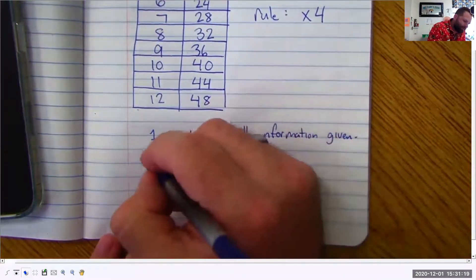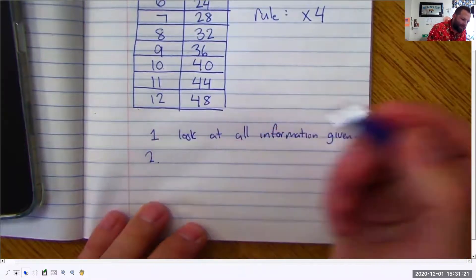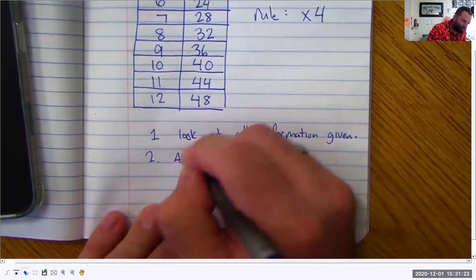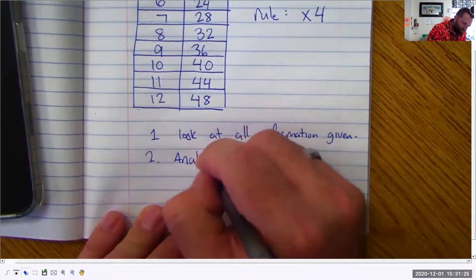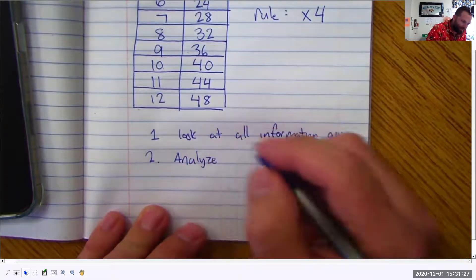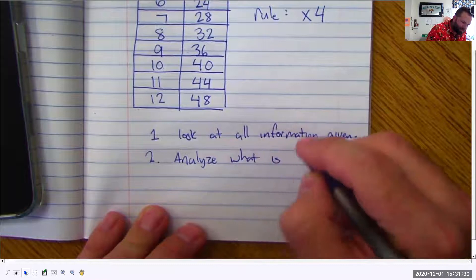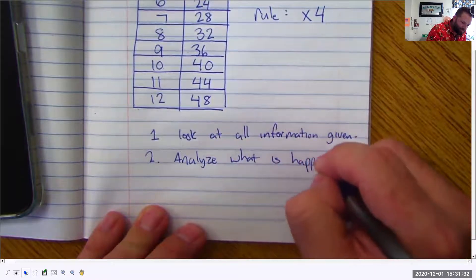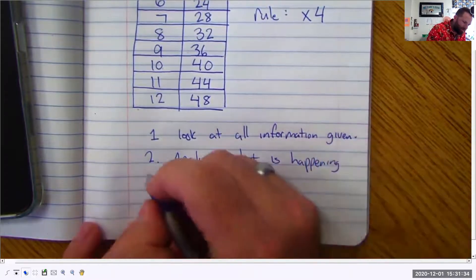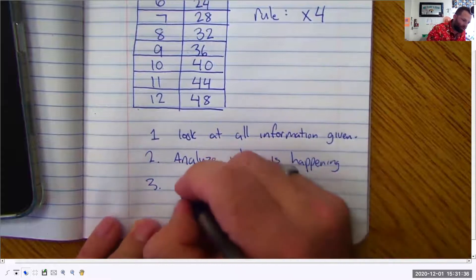Look at all the information given. Okay. Second one. Analyze what is happening. And the third one. Test your theory.